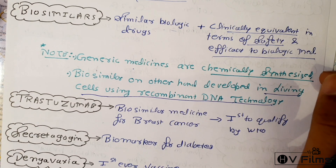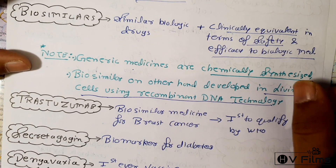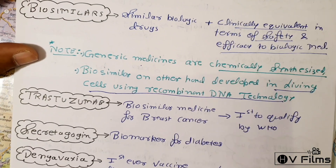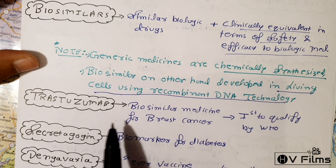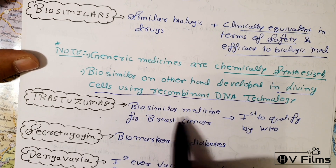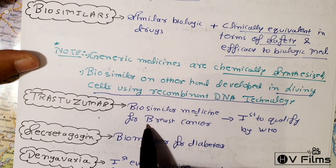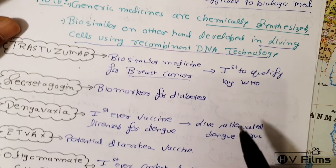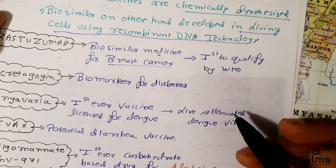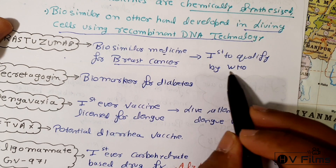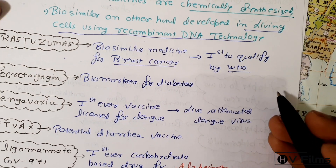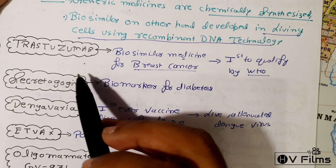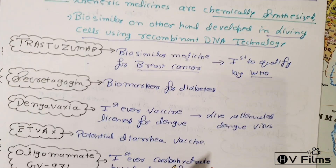Trastuzumab is a biosimilar medicine for treating breast cancer and is the first one to be qualified by the WHO.